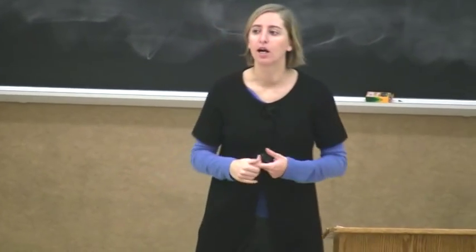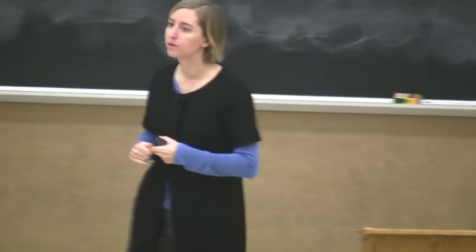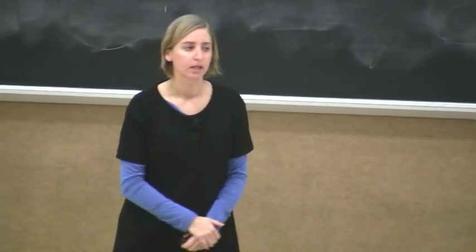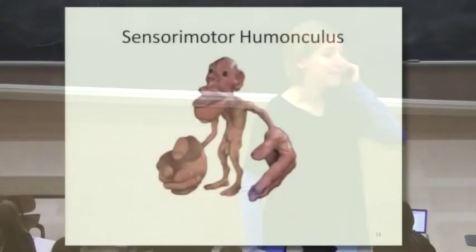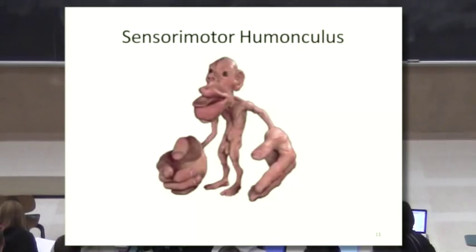We also talked about our touch system, which helps us determine if there's dangerous things to our body. We have regular touch sensors. This is basically a graph of how many receptors are for each part of the body. So you can see that there are a lot more receptors for the hands and the face, especially the lips, than other parts of your body, making those the most sensitive parts of your body.